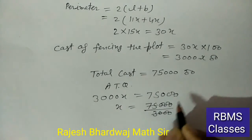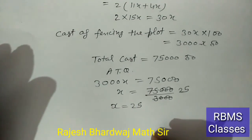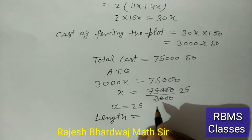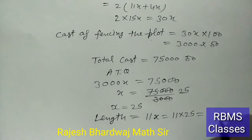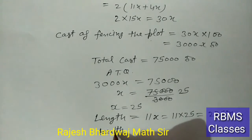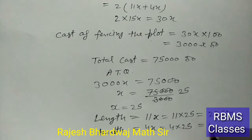Total cost = ₹75,000, so 3000x = 75,000 → x = 25। Therefore length = 11x = 11 × 25 = 275 meters, and breadth = 4x = 4 × 25 = 100 meters। Thank you।